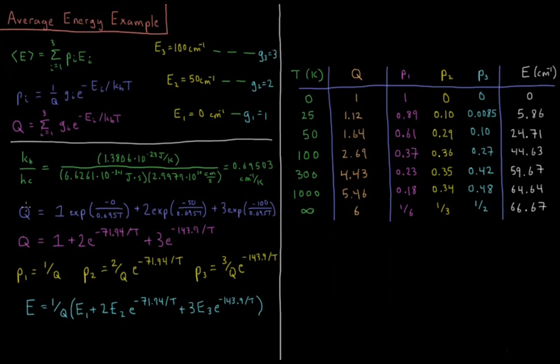So what is our partition function? Well, our partition function is the sum over all the levels of its degeneracy times the Boltzmann factor for that level. So we have 1 times e to the minus 0 over 0.695t plus 2e to the minus 50 over 0.695t, where g2 equals 2, e2 equals 50, plus 3e to the minus 100 over 0.695t.